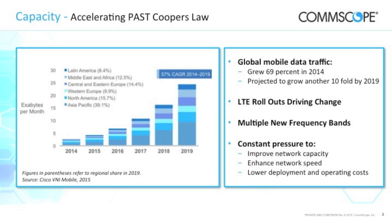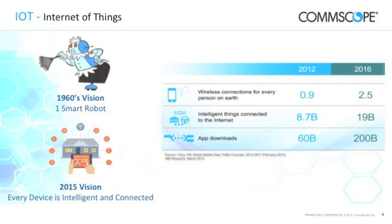Operators have a lot of pressure to provide more capacity and enhance the speed of the network. Not only do we need to provide more capacity to handle more data at the same time, we also want a better user experience so data can be transmitted faster. And all of this needs to be done with low running costs. One of the key drivers for additional traffic is going to be the Internet of Things — the IoT.